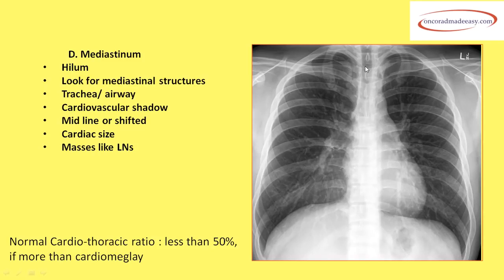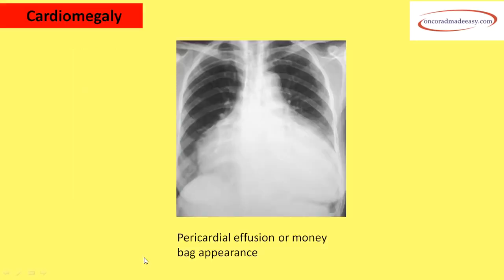Moving more inwards, we look at the hila and mediastinum. In the mediastinum, look for the trachea, the bronchi, the cardiovascular shadow, any midline shift, the size of the heart, and any masses such as lymph nodes. The normal cardiothoracic ratio is less than 50%; if it is more than 50%, it is termed cardiomegaly.